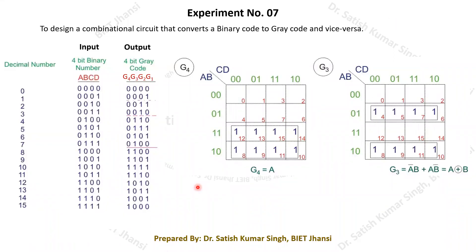Welcome to the digital system design laboratory. Today we are going to design a combinational circuit that will convert a binary code into gray code, or given a gray code, generate the binary code. This is our purpose for this particular experiment: to convert binary code into gray code and vice versa. First we will look at how binary code is converted into gray code, then how gray code is converted back into binary.